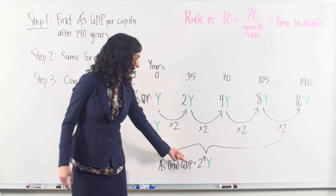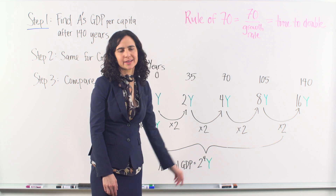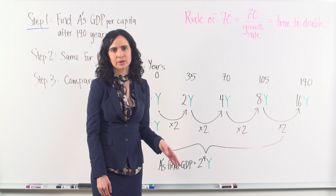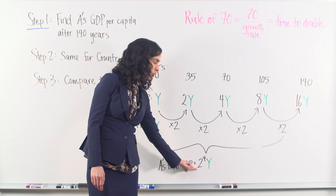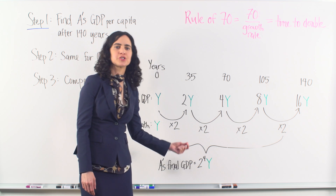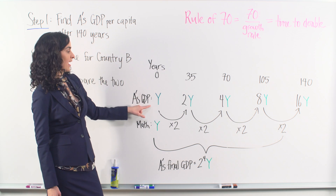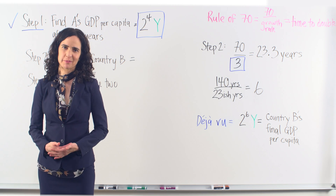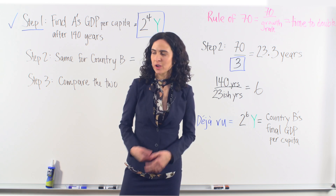This isn't expressed as a plain number like 6,532. Unfortunately, we have to express this final value in terms of A's initial value Y. With that, we've wrapped up step 1 and can move on to step 2.